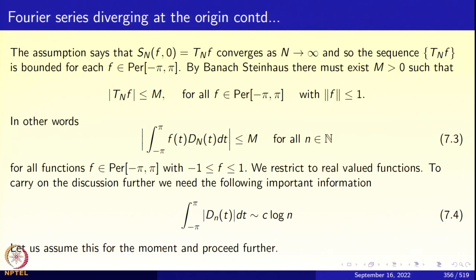We restrict to functions lying between −1 and 1, and to real-valued functions. We will also prove that the integral from −π to π of |Dₙ(t)| dt is approximately c·log n for some positive constant c. So these integrals on the left-hand side of 7.4 go to infinity as n tends to infinity. The question is how to arrive at a contradiction using 7.3 and 7.4.